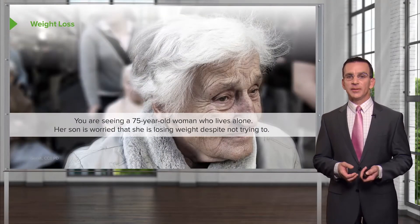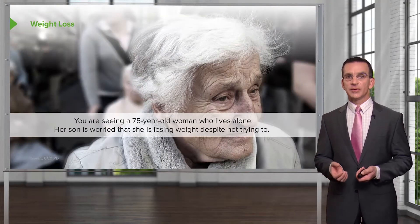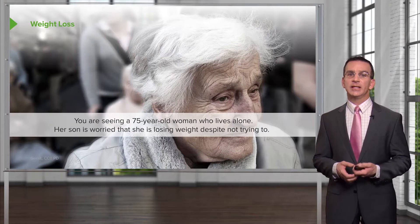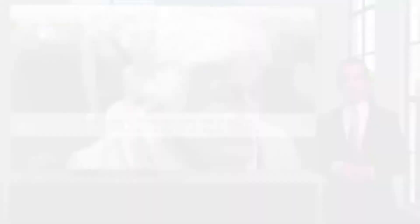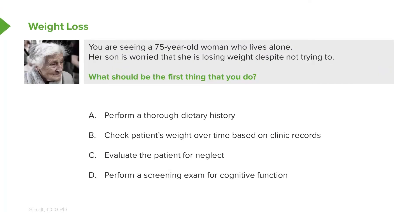We have a 75-year-old woman. She lives alone. Her son brings her in and he is worried that she's losing weight despite not trying to lose weight. So what should be the first thing that you should do? Is it A, perform a thorough dietary history? B, check the patient's weight over time based on clinic records? C, evaluate the patient for neglect? Or D, perform a screening exam for cognitive function? What do you think?